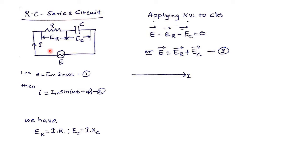Current is common because it is a series circuit, so I consider current to be the reference vector. The same current I is flowing through R as well as C. The moment current I flows through R, it creates a voltage drop ER = I × R. Now the phasor relation between the current and voltage across the resistance is that voltage across R is in phase with the current through R. So when drawing the phasor diagram, we draw each vector across each component with respect to the reference vector, then take the resultant. Do not make the mistake of remembering the entire phasor diagram and drawing it at once — if one vector is wrong, the entire diagram is incorrect.